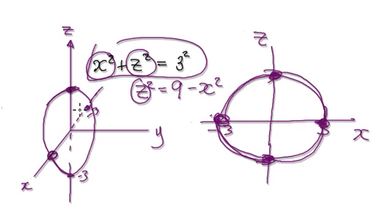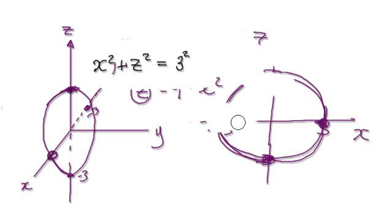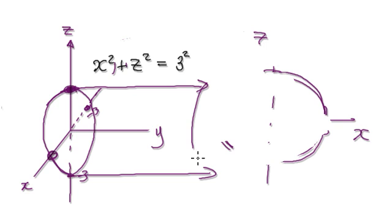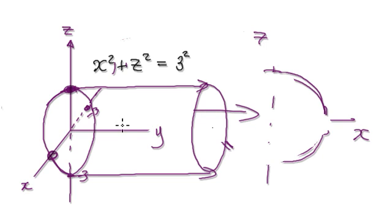Now we know we've got to drag this along the Y direction. We're going to drag the circle along Y. The reason it's dragged in the Y direction is because Y is not in the equation. So if you take a point — say at Y equals 5 — and drag it along here, it's now at Y equals 5.